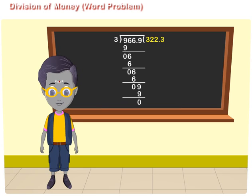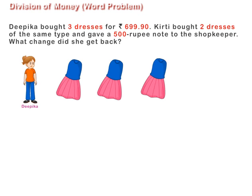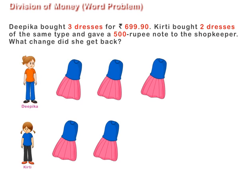Division of Money. Deepika bought three dresses for Rs. 699.90. Keerti bought two dresses of the same type and gave a Rs. 500 note to the shopkeeper. What change did she get back?